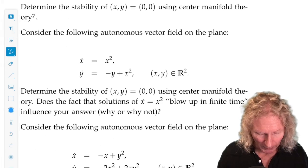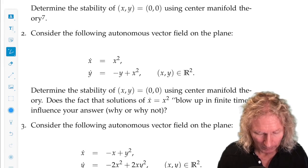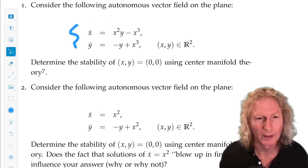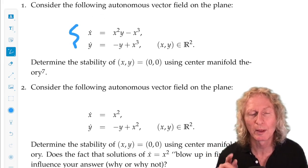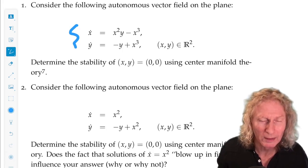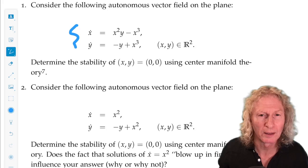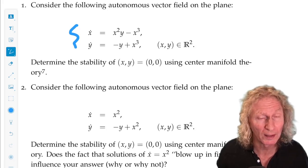Now, in the second problem, it's similar. One thing I wanted to say, when the center manifold is one-dimensional, you can really understand the nature of stability just by the sign of the vector field.